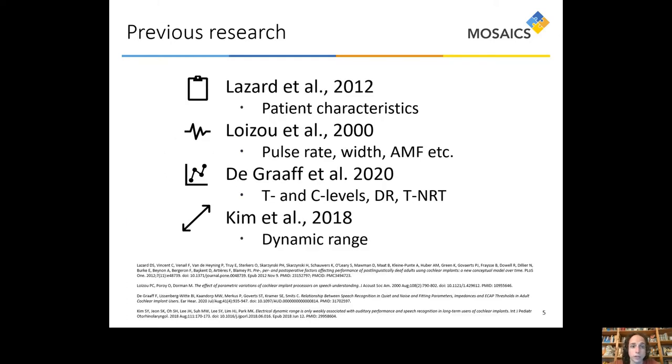But first, a word on previous literature. There is quite some investigation into patient characteristics and cochlear implant performance. I have selected here the work by Lazard and others just as a title of example, but there are dozens of them. That work investigated characteristics such as duration of deafness, etiology and age of the recipients.